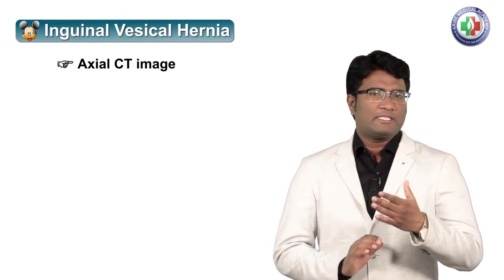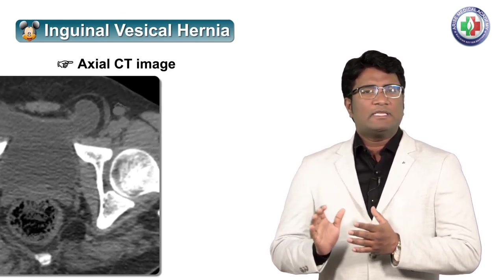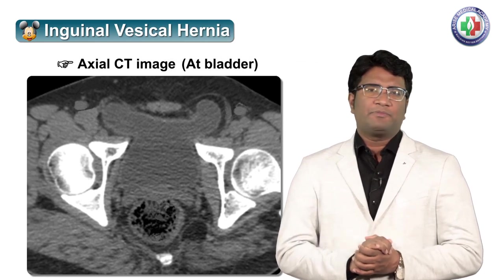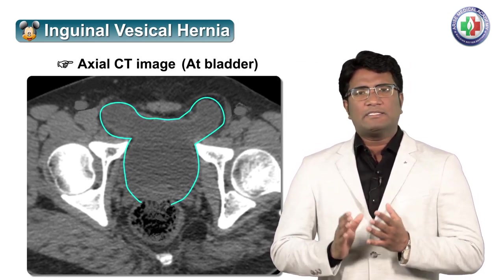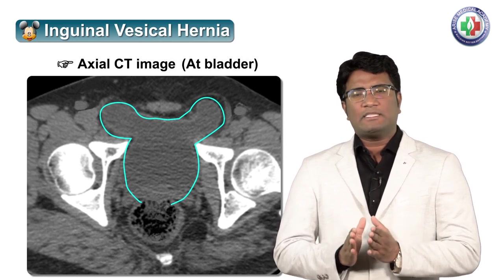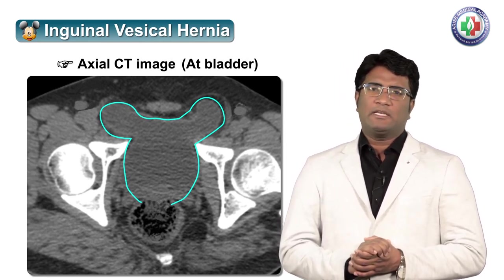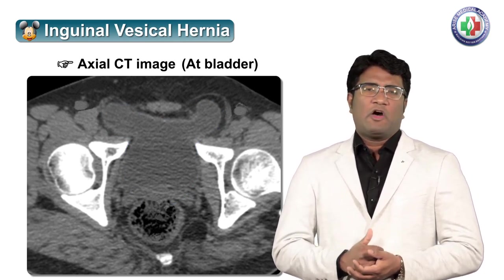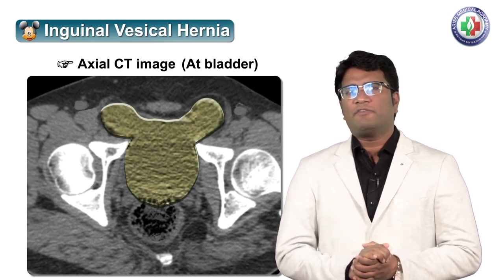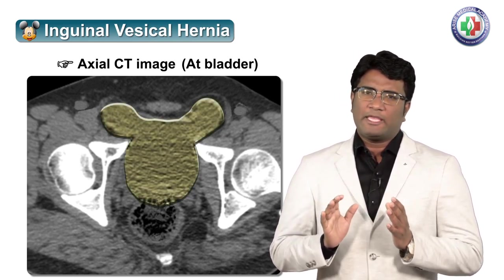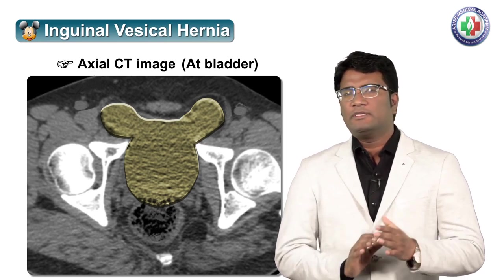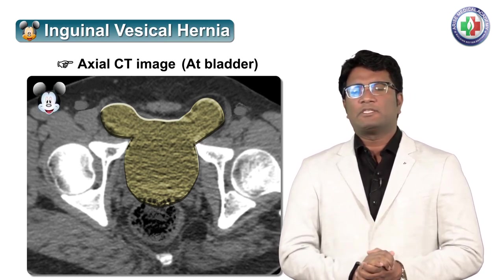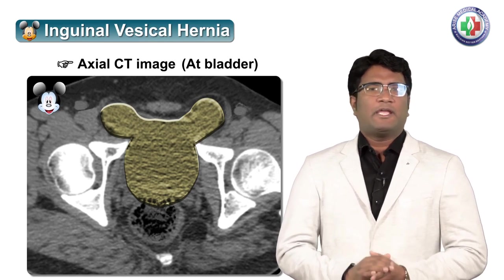Another site where we can see a Mickey Mouse appearance is on axial imaging at the level of the pelvis or bladder. On a CT scan image at the level of the bladder, when the bladder is distended and shows herniation into the inguinal regions, this inguinal vesical hernia on axial imaging takes the shape of a Mickey Mouse. So, inguinal vesical hernias can also show the Mickey Mouse sign. This covers all the places where we see the Mickey Mouse sign in radiological imaging.